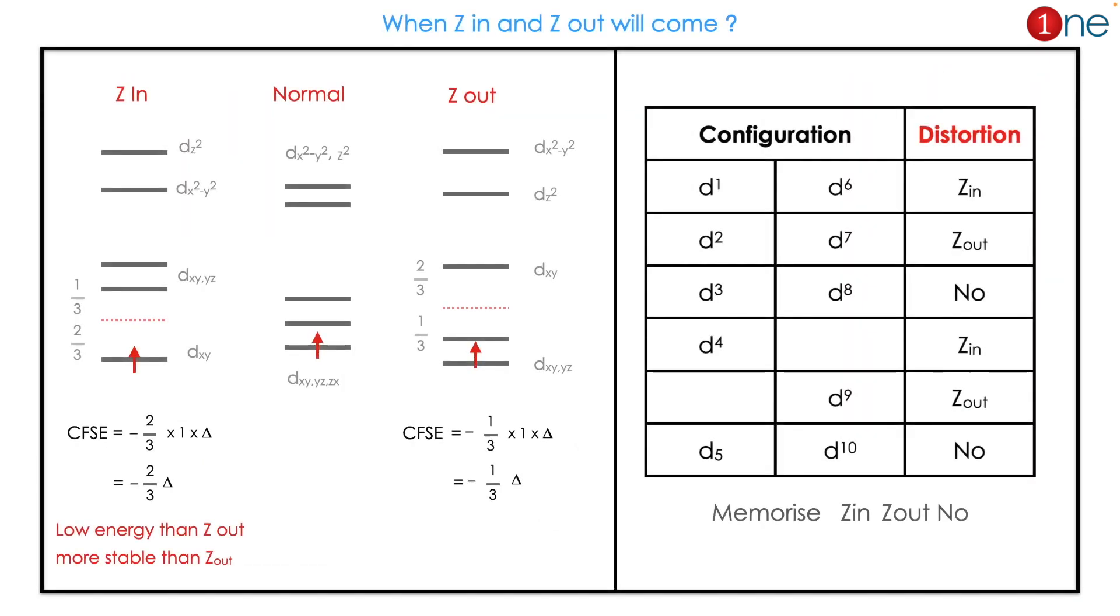When Z in and Z out will come, you have to calculate from CFSE. Z in means dz² goes to higher energy; Z out means dz² goes to lower energy. If you fill the electrons, you can roughly calculate the CFSE.